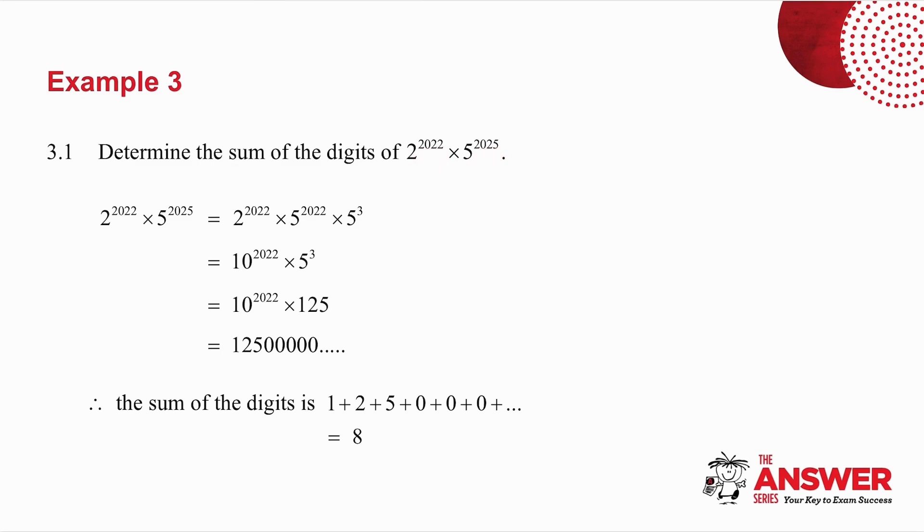You will notice the bases are different and the indices are different. They've asked us for the sum of the digits. If we've got a very big number, we're not going to be able to get the sum if the digits are all sorts of numbers. So there has to be something we can do. We need to remember that a^m times b^m equals (ab)^m.